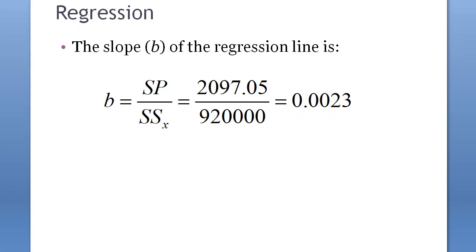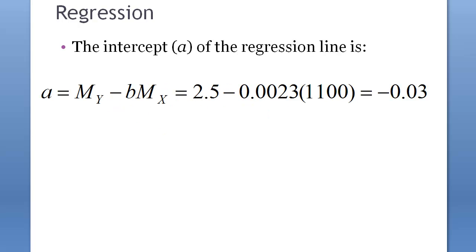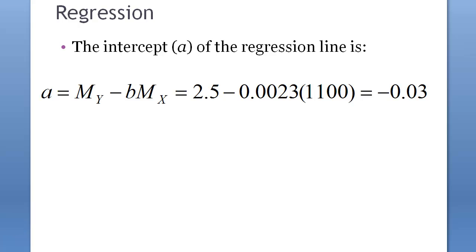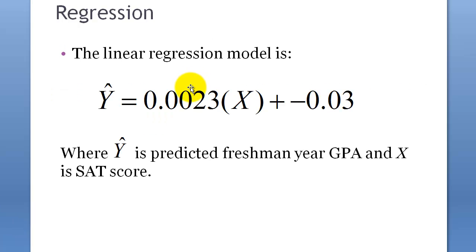Now let's get the value for the intercept, which is mean of Y minus slope times mean of X. That gives us minus 0.03. So that's the regression model we get.